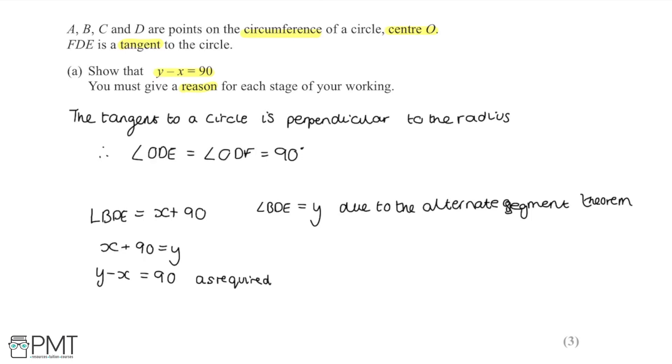Now as for how the marks are awarded here, you gain the first mark for finding one missing angle, so we've found this 90 degree angle. There are lots of different ways you can go about doing this question, lots of different angles you can find and work with, but this is just the way that we've gone about doing it.